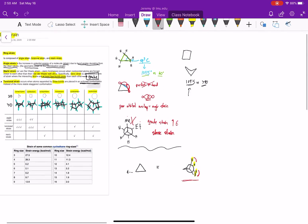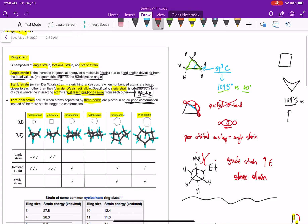So if we look at our strain, angle strain is when your geometric angle differs than the hybridization. Steric strain is when you have something that's gauche. Torsional is when you have bonds or atoms that are eclipsed.